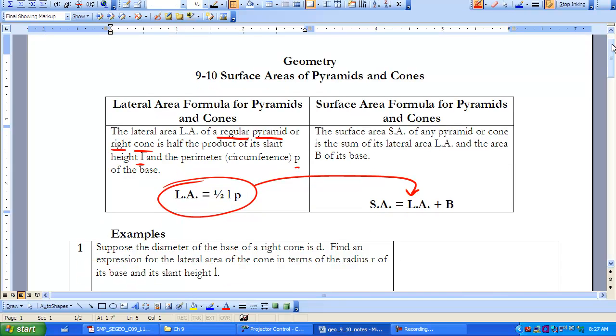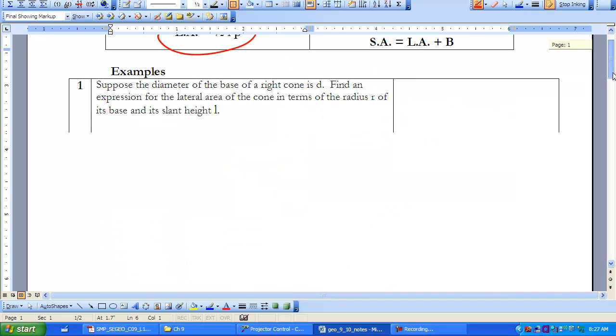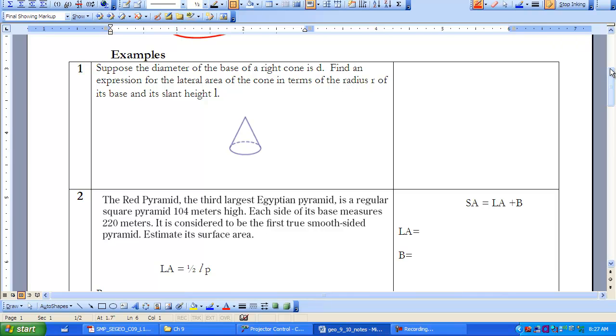So we're going to start out, we're going to do three examples in this video. The first one is just taking a look at a cone. It's a right cone, has a diameter D. And we want to find an expression for the lateral area of a cone in terms of the radius of its base and its slant height.